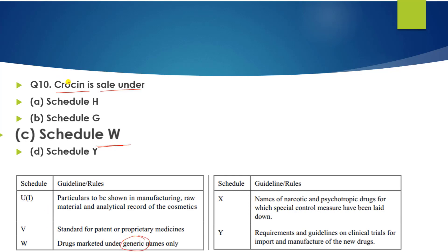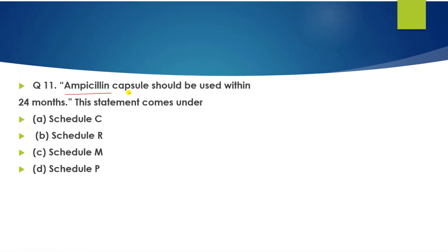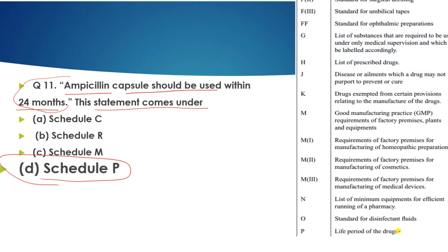Question number 11: Ampicillin capsule should be used within 24 months — this statement comes under which schedule? The answer is Schedule P. Schedule P is related to the life period of drugs. So remember: P for Schedule P, P for Period.